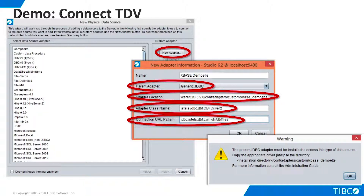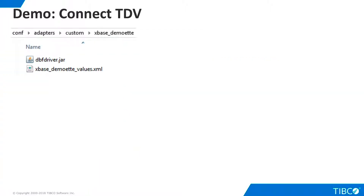We click OK and cancel out of the new data source dialog. We simply copy the driver into the newly created directory, which already contains a values.xml file. At this point, we must restart TDV so that it can recognize the new driver. Once we have restarted, we can create a new data source and introspect our tables in the usual fashion.